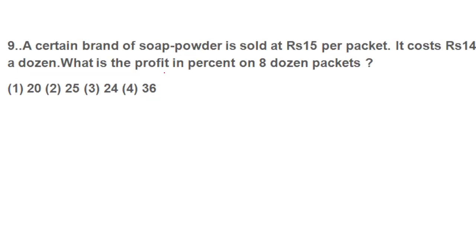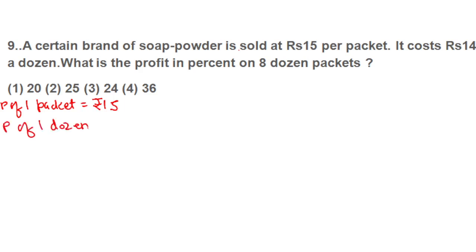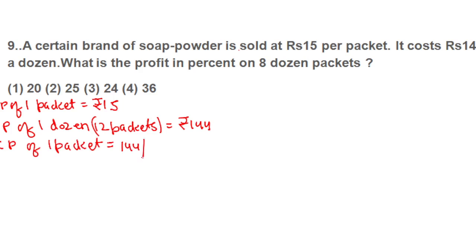Question 9: a certain brand of soap powder is sold at Rs. 15 per packet. It costs Rs. 144 per dozen. SP of 1 packet is Rs. 15. CP of 1 dozen — a dozen has 12 packets — is Rs. 144. So CP of 1 packet is 144 upon 12, which equals Rs. 12. They are asking for profit percent.